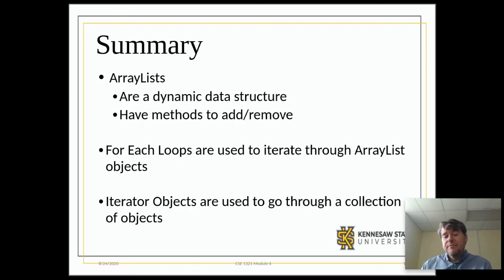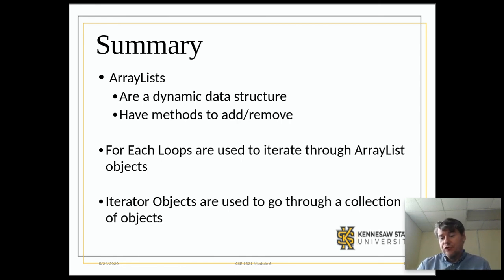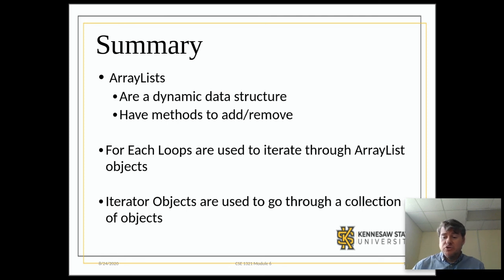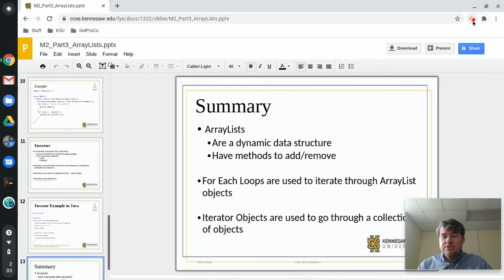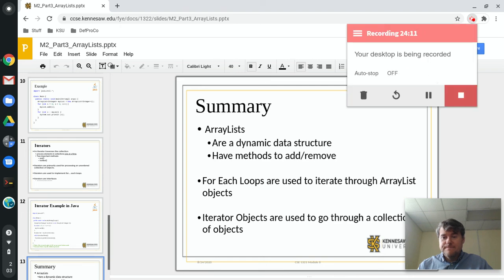In brief summary: array lists are super cool — they allow you to store a bunch of stuff in a dynamically growing and shrinking structure. For loops, for-each loops, and iterators are three different ways to go through a collection of items, with array lists being an example of such a collection. That completes the topics for module two. Next week we'll move on to module three and do a review of object-oriented concepts. Have a fantastic week and I'll see you in lecture number six.